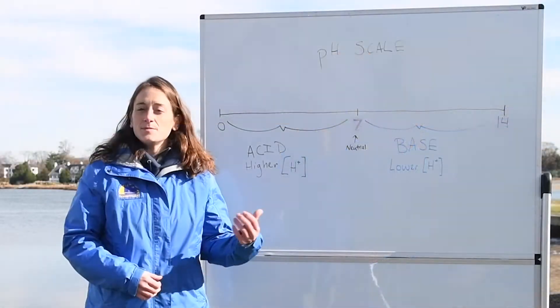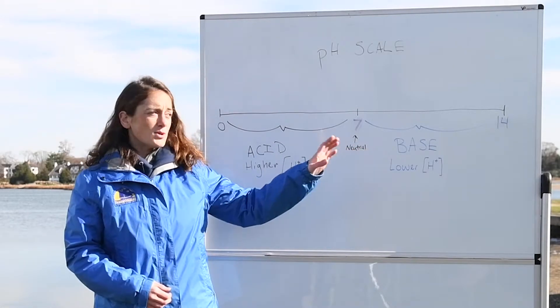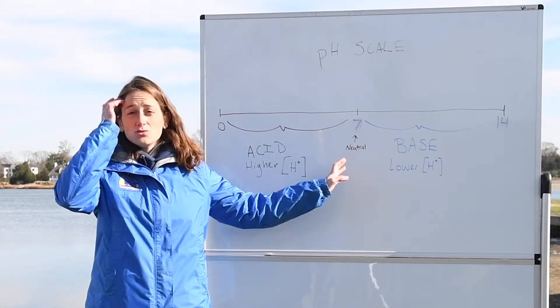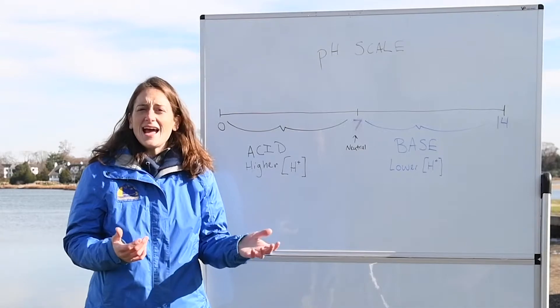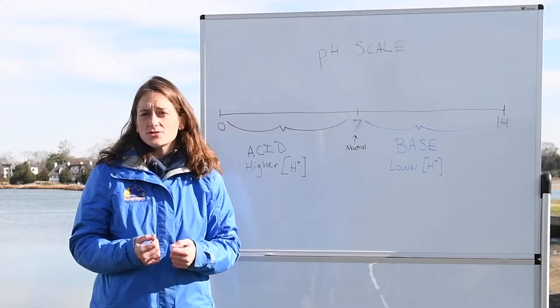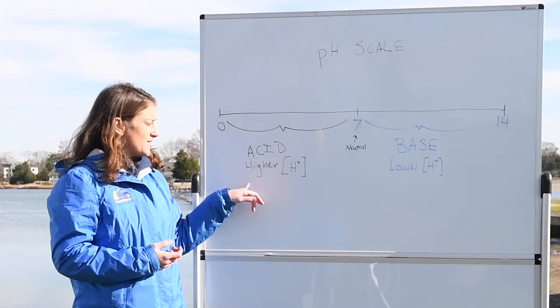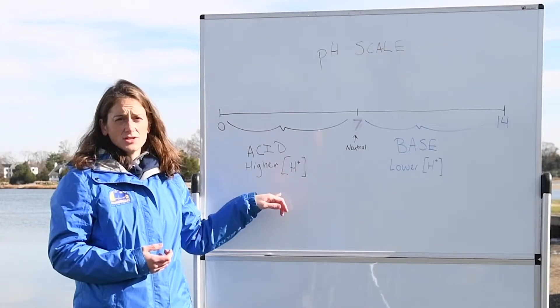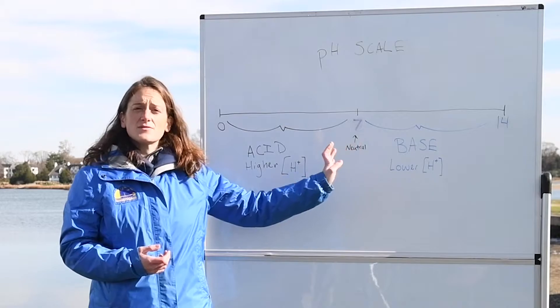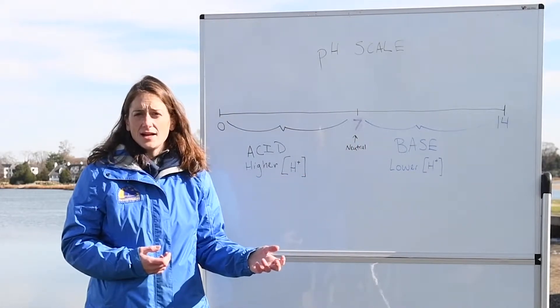Before we dive into the science behind ocean acidification, let's quickly review pH. The pH scale is a logarithmic scale that goes from 0 all the way up to 14, with 7 in the middle being neutral. It tells us whether something is an acid or a base, and what it's really talking about is the concentration of free hydrogen ions in a solution. If you're below 7, it's an acid, with higher hydrogen ion concentrations than in pure water. If it's a base, it's from 7 to 14, with lower concentrations of hydrogen ions.